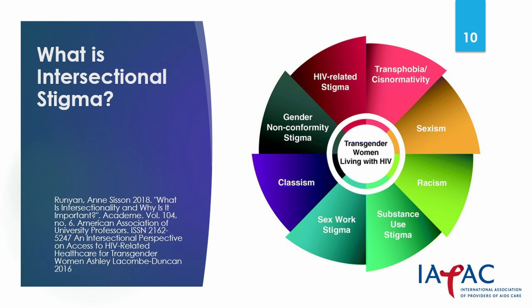Intersectionality identifies multiple factors of advantage and disadvantage. The example on the right illustrates the multiple intersecting stigmas that may be faced by transgender women living with HIV. These include transphobia, sexism, racism, substance use stigma, sex work stigma, classism, and gender non-conforming stigma.